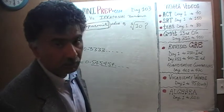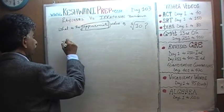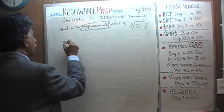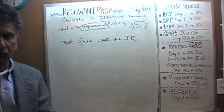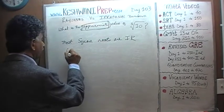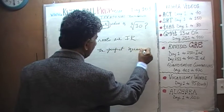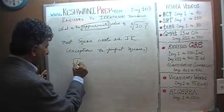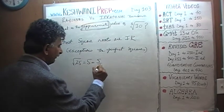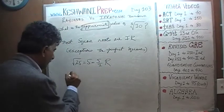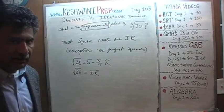What we also learned on those two days is that most square roots — the square root of most numbers — are irrational numbers. The exception, of course, would be the perfect squares. That's why they are called perfect squares. For example, the square root of 25 is 5, and because 5 can be written as a fraction — 5 over 1 — it is a rational number. But the square root of 26 is an irrational number; if you were to write that in decimal, it will never end and it will have no pattern.